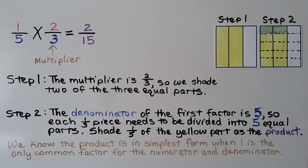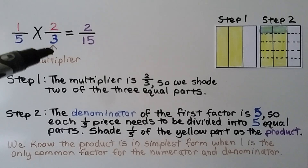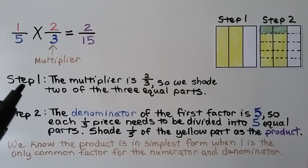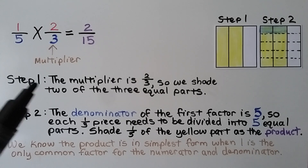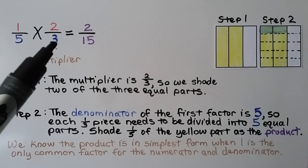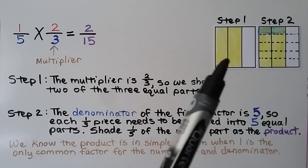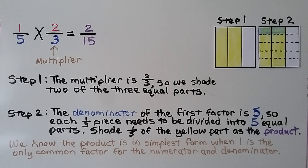Here we have one-fifth times two-thirds. The second factor, two-thirds, is called the multiplier. For the first step, since the multiplier is two-thirds, we shade two of three equal parts of our model.